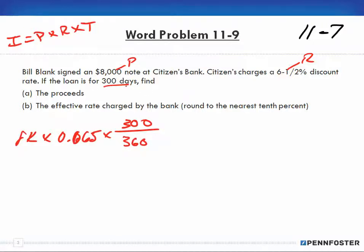So we multiply $8,000 times 0.065 times 300 and we end up with 156,000. That's over 360 days, and when we divide that by 360 we end up with interest of $433.33.